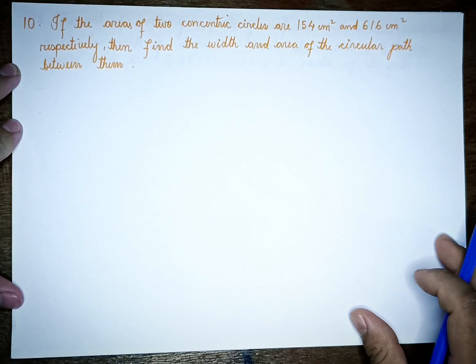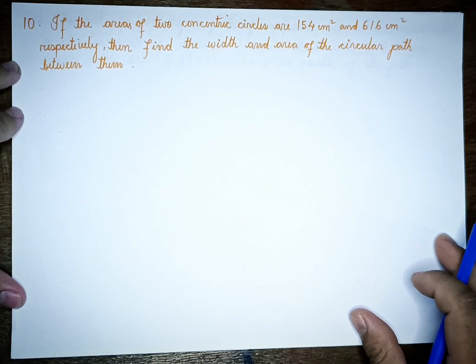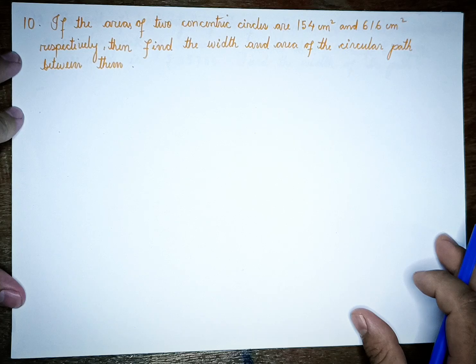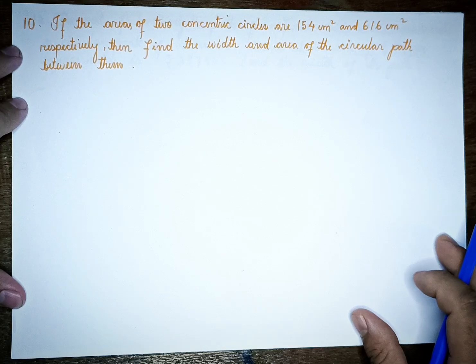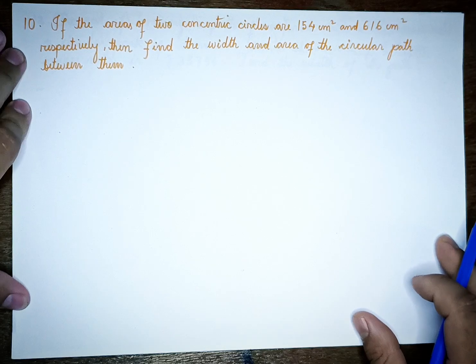If the areas of two concentric circles are 154 cm² and 616 cm² respectively, find the width and area of the circular path between them.